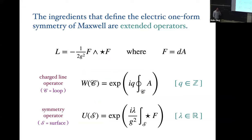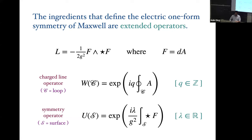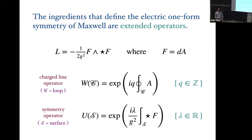Let's start with Maxwell theory. Here is the Maxwell action — just the action of a propagating photon. I'm going to focus on the so-called electric one-form symmetry. These symmetries have the unique property that they don't act on local operators — they act on objects with finite extent. The charged objects are Wilson loops: an integral of the gauge field over some contour C. The operator which implements the symmetry transformation is supported on a codimension-two surface — a two-dimensional surface integral of star F.